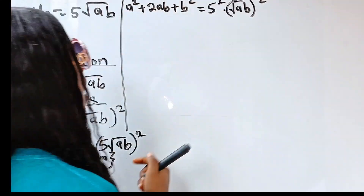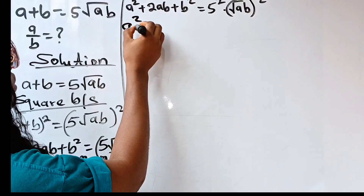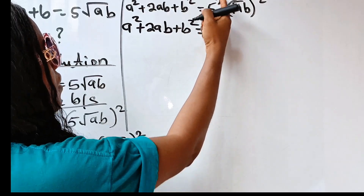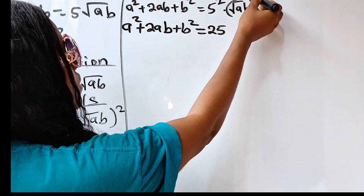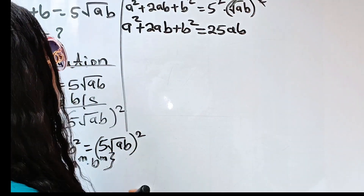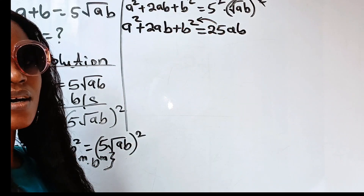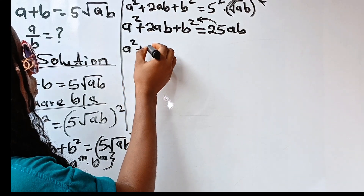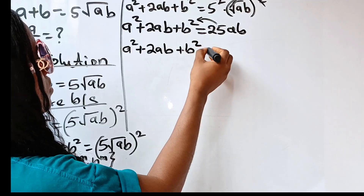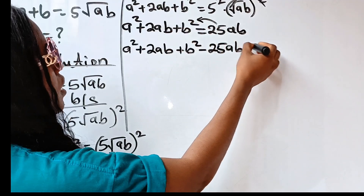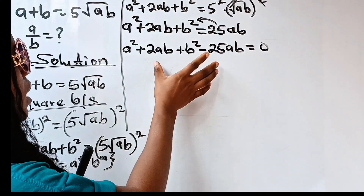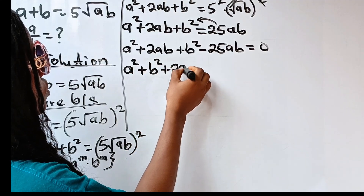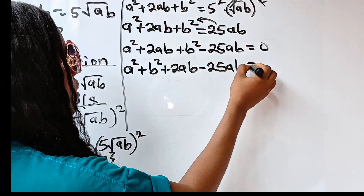This is where we are. We have A squared plus 2AB plus B squared is equal to 25 times AB — since root AB squared removes the root, leaving AB. Now let us transfer the 25AB to the other side of the equation, giving us A squared plus 2AB plus B squared minus 25AB is equal to 0. Rearranging: A squared plus B squared plus 2AB minus 25AB equals 0.